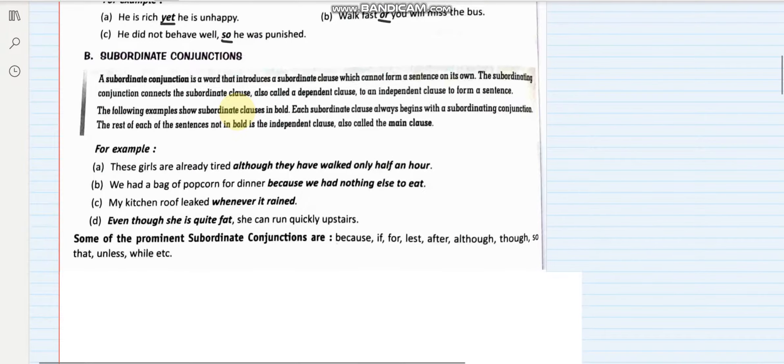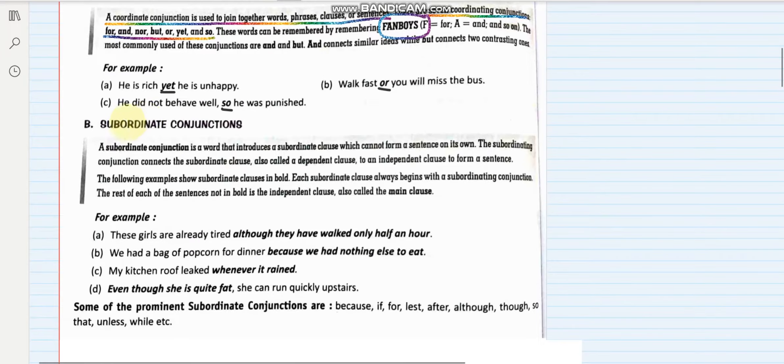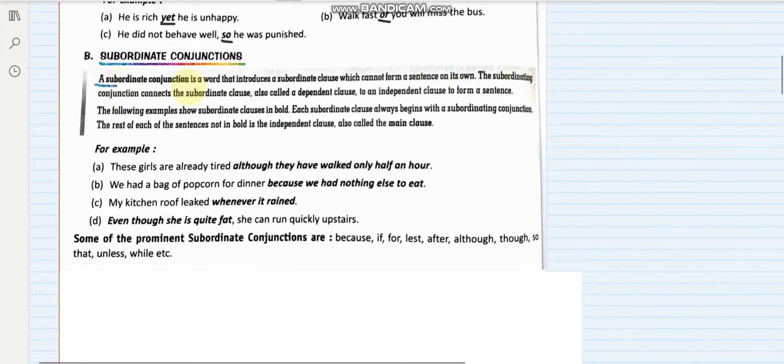Now let us see what are subordinating conjunctions. A subordinate conjunction is a word that introduces a subordinate clause which cannot form a sentence on its own. Now we have a dependent clause here and an independent clause here.